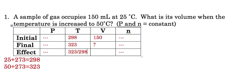Now, because we know that volume and temperature are directly proportional, that means that whatever the effect was for temperature, that's also going to be the effect for volume. So to calculate the new volume, we'll just take the old volume, which was 150 milliliters.